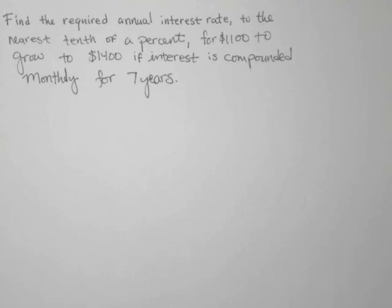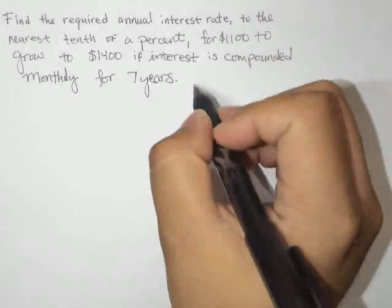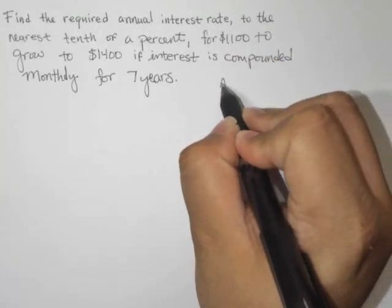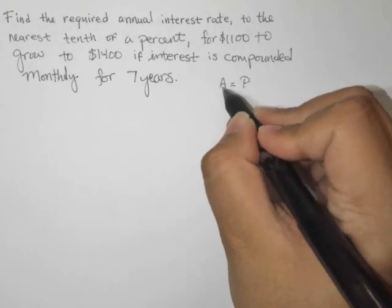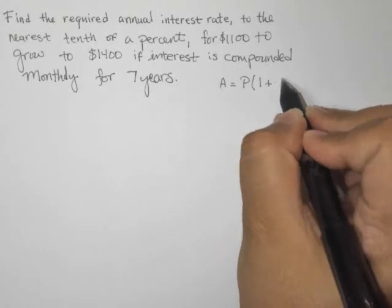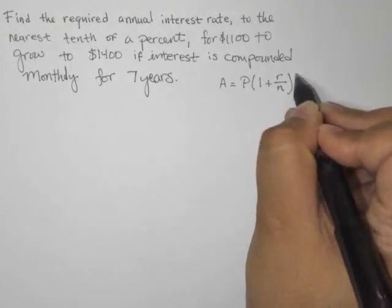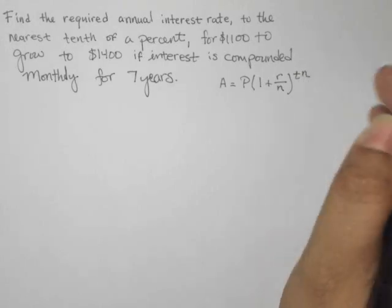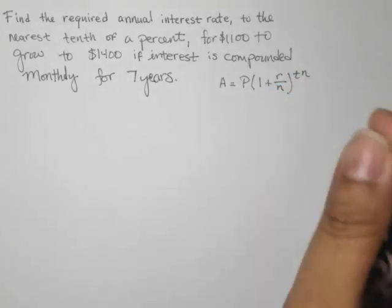So let's write down everything that we know. For sure, we know the formula. We have A equals P, the principal. So this is the future value equals the principal times 1 plus the interest rate R, which we don't know, divided by N raised to the power TN, which T is the number of years, and N is the number of times we're compounding interest.